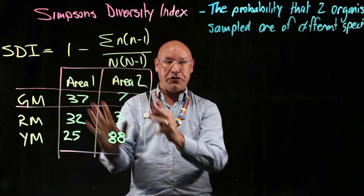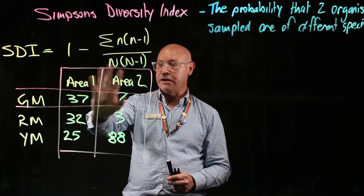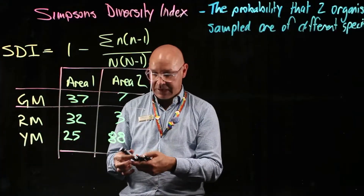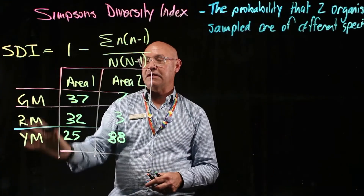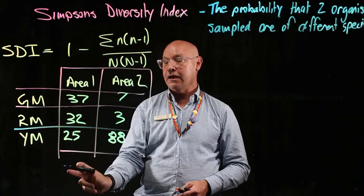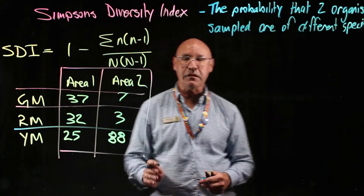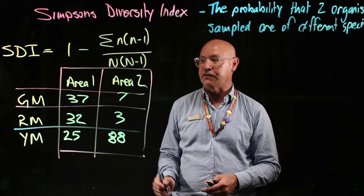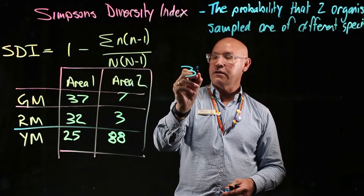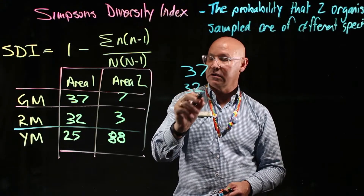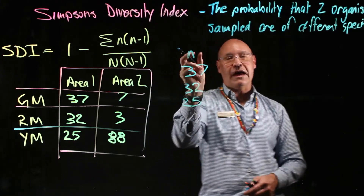I'm going to work you through an example. Here are two areas, and we've got three different species. We're going to work out the SDI for area one and compare it to area two. So I'm going to write down the values: 37, 32, and 25. Each of those is n.